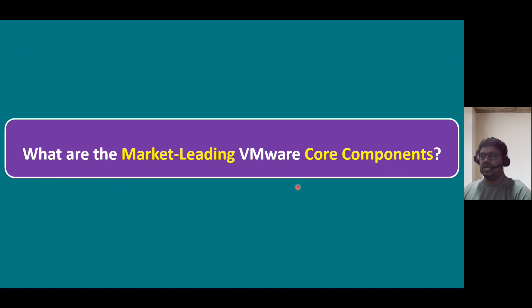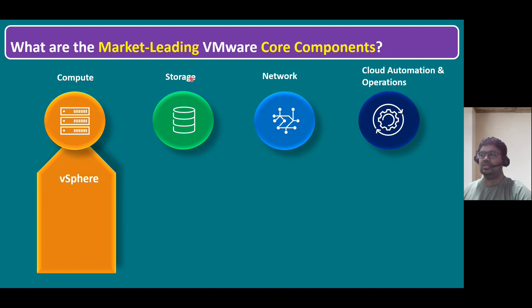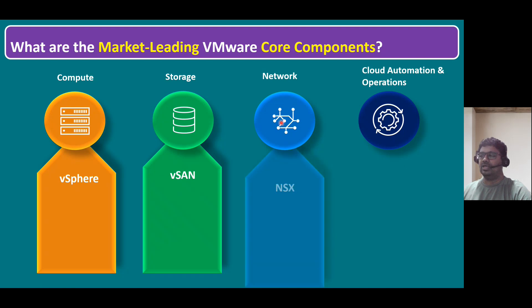Let's start with the market-leading VMware core components. As we know, the main core components are compute, storage, network, and cloud automation and operations. Within these four towers, VMware is already leading in compute server virtualization, which is vSphere. For server storage virtualization or software-defined storage, VMware has the vSAN product. For network virtualization — also called software-defined networking — VMware introduced NSX. Previously we had NSX-V only for virtualization, and later they introduced NSX-T. Now recently VMware renamed NSX-T to VMware NSX, and the latest version is 4.0.